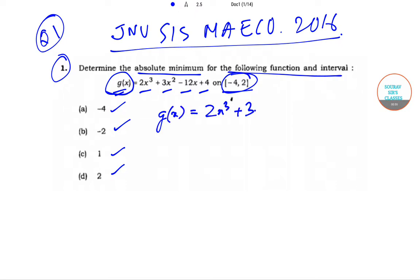Now if we differentiate it, then we get g'(x) equal to 6x² + 6x - 12. Now if we take 6 common over here, then this will give us x² + x - 2. Upon breaking this will give us (x + 2)(x - 1). So this is g'(x).